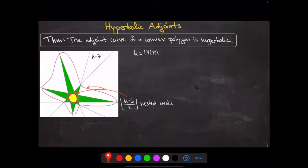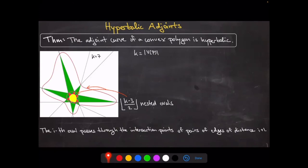For polygons we could see a little more — these adjoint curves are hyperbolic, meaning the real locus consists of nested ovals. We can exactly describe what these ovals are: neighboring edges meet at a vertex, but edges at distance two give the first oval, and the i-th oval passes through intersection points of edges at distance i+1. For a polygon with odd number of vertices the pattern is clean, and with even number of vertices you also get a pseudo-line passing through the intersection points of opposite edges.